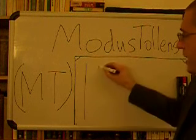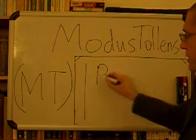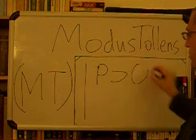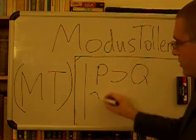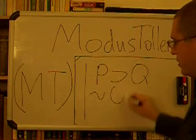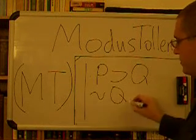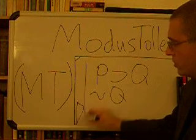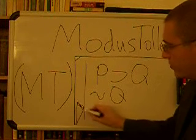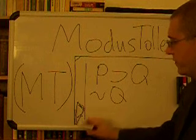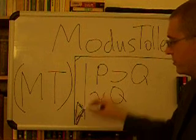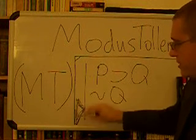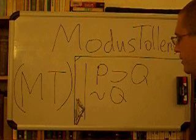In our assumptions, we have a conditional: if P, then Q. And we also have Q fails. Our result — let's see if we can find the result logically before I tell you what it is in the rule book here.